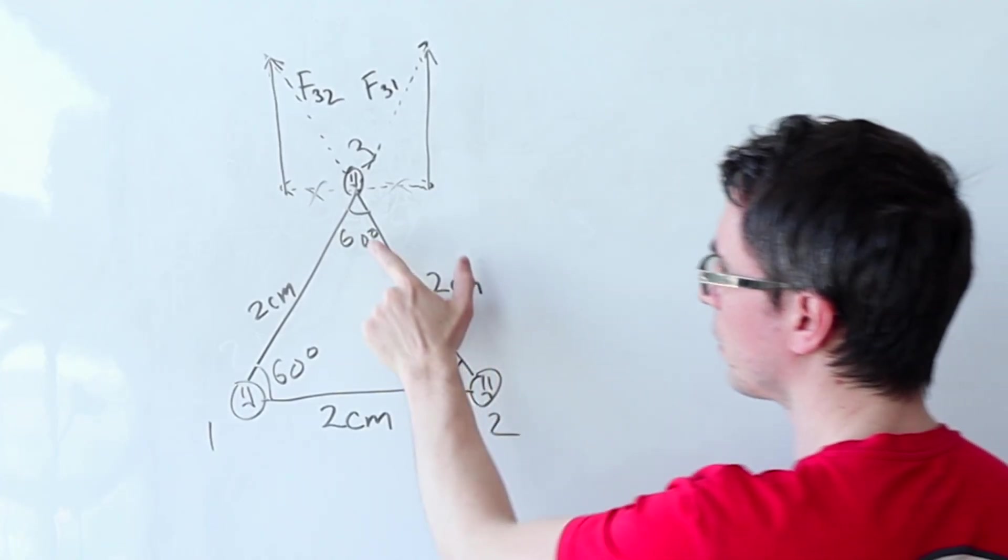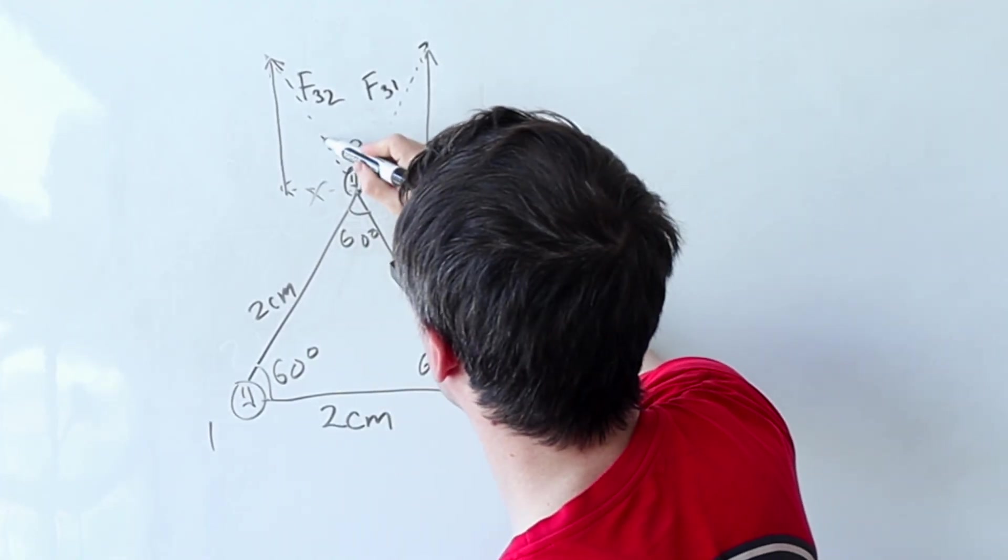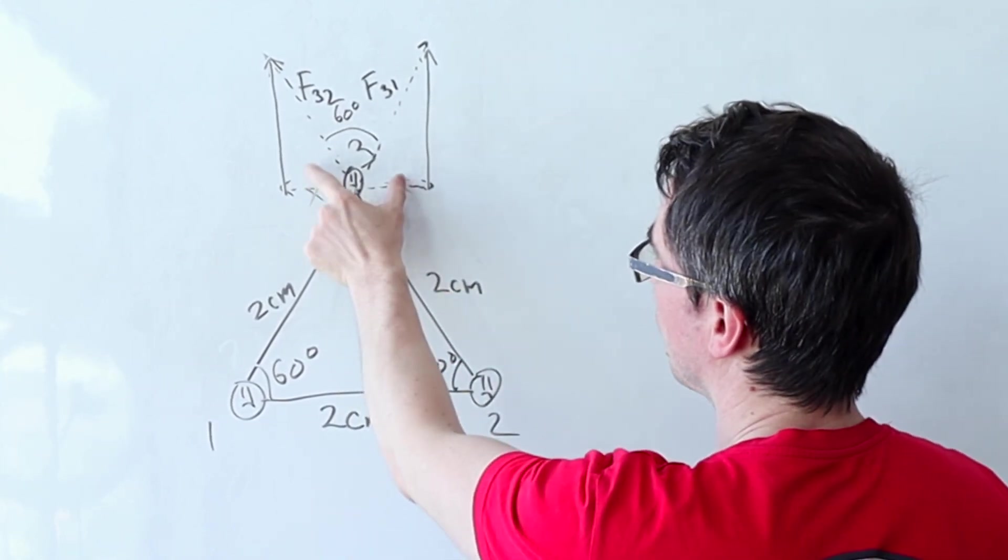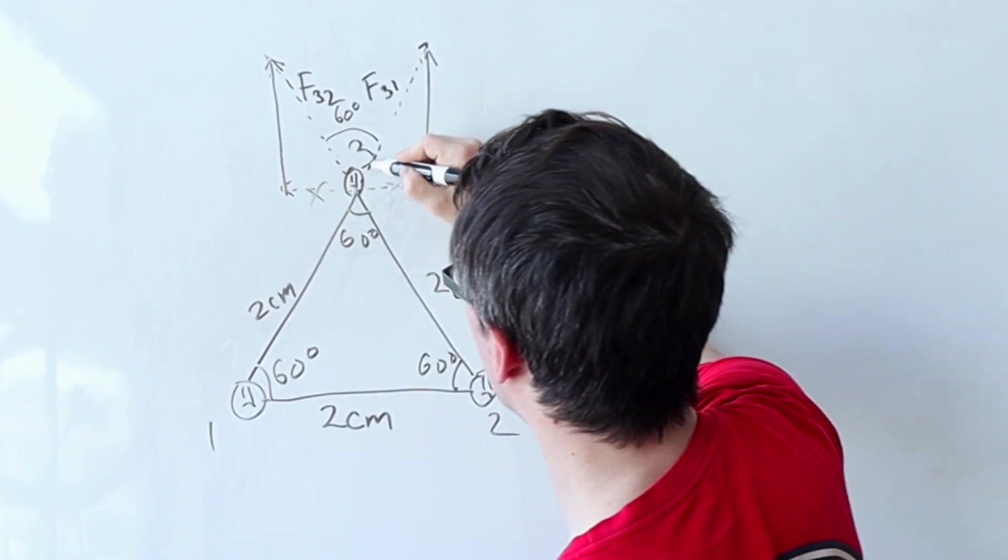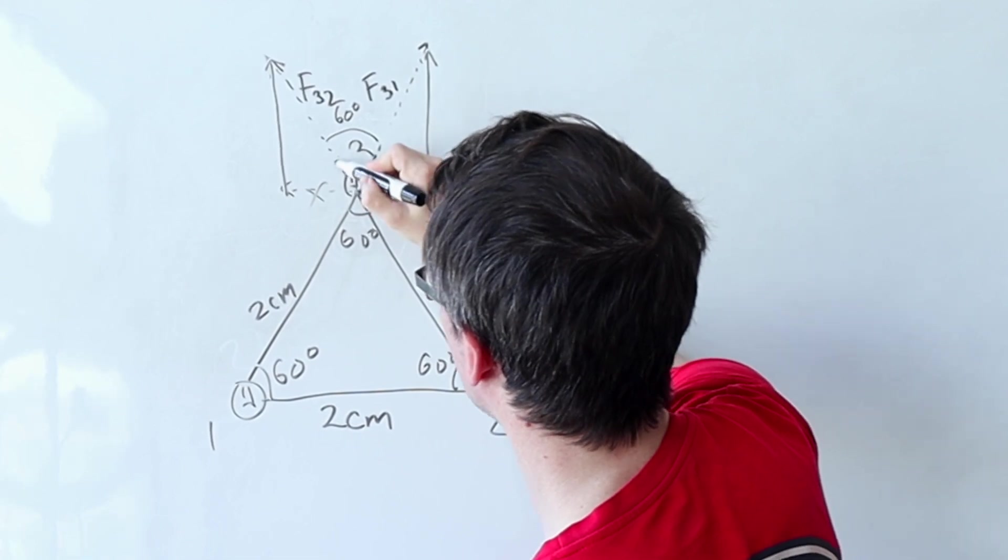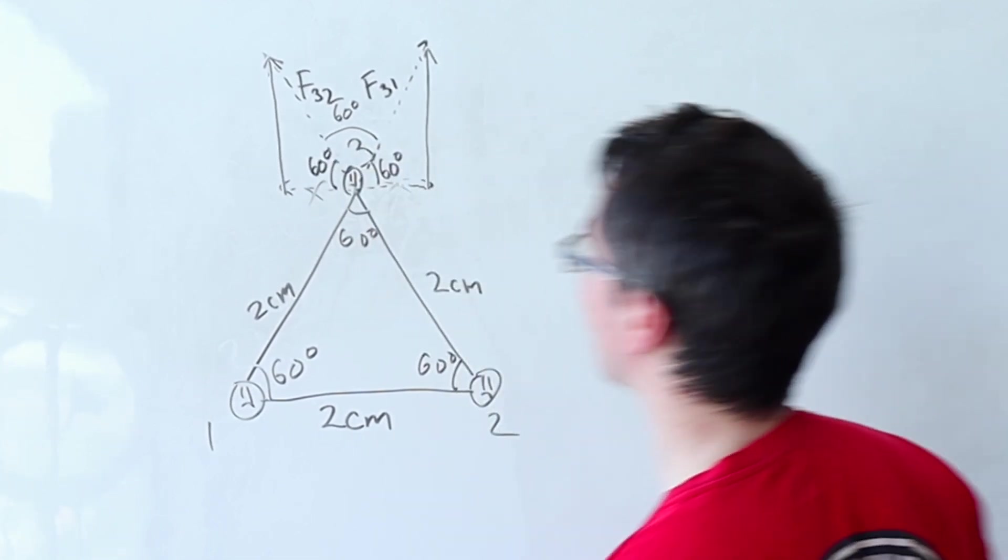Okay well if this angle here is 60 this makes this angle here 60. We're just going to make those two being equal adding up to 180. This here will be 60 as well and this here will be 60 as well.